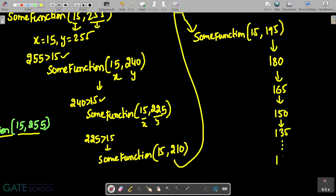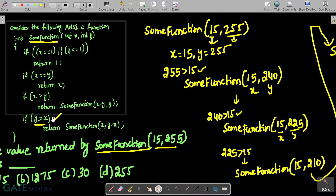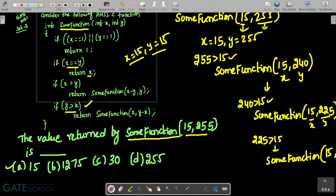Ultimately, when y reaches the value 15, the conditional expression changes. Now x equals 15 and y equals 15, so the condition x equals y becomes true. This returns x, and since x is 15, the function returns 15.